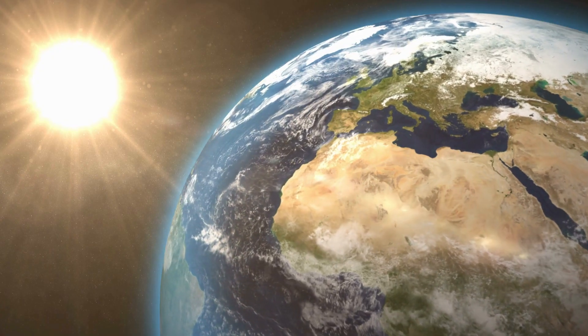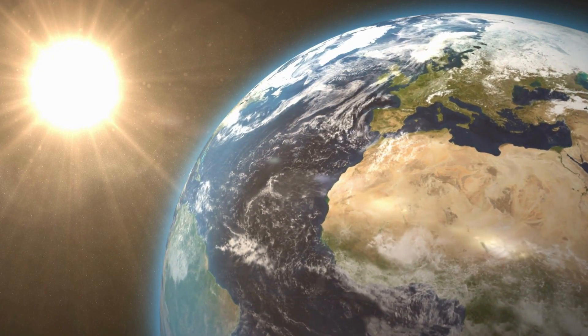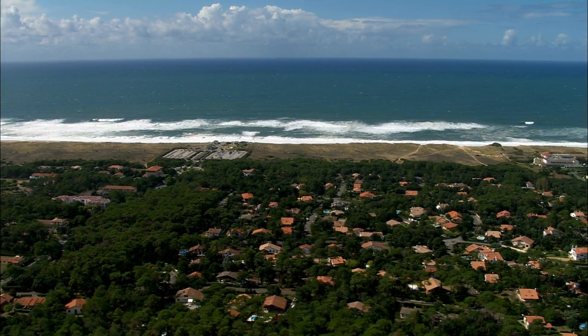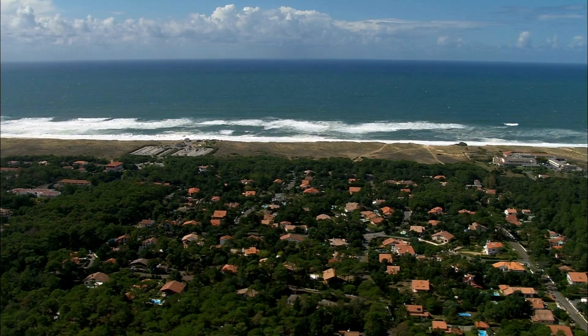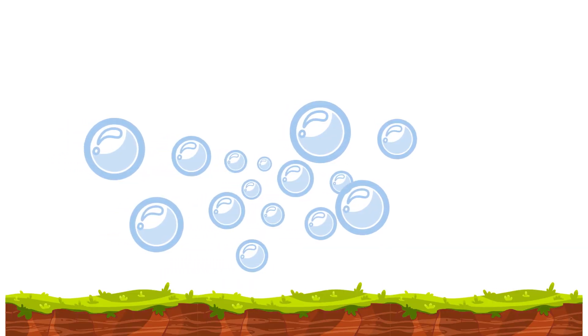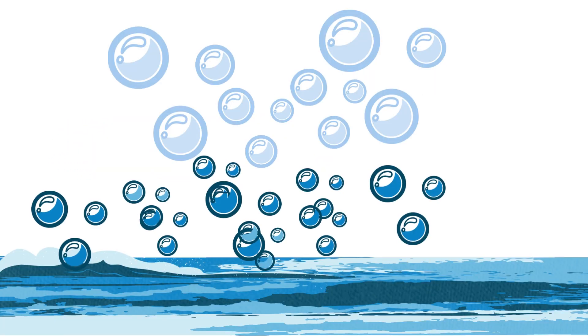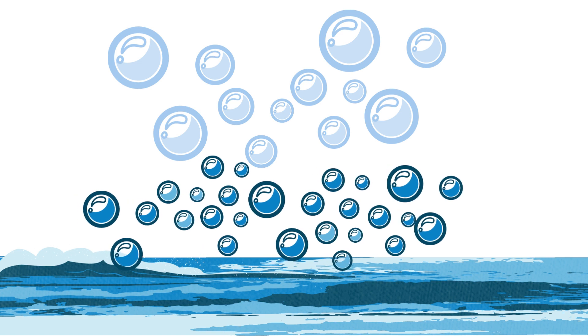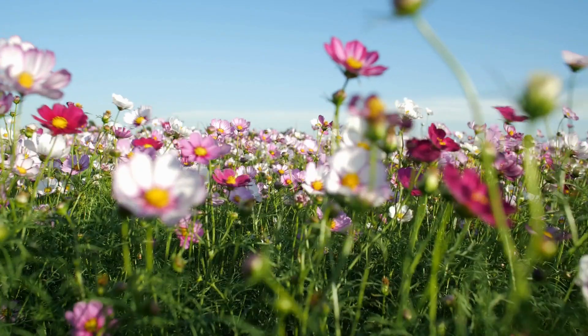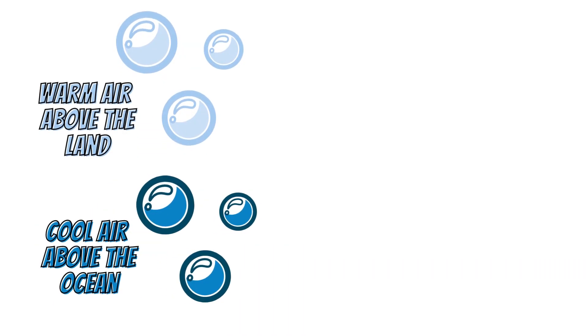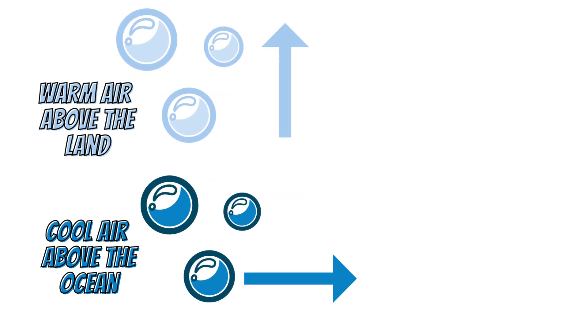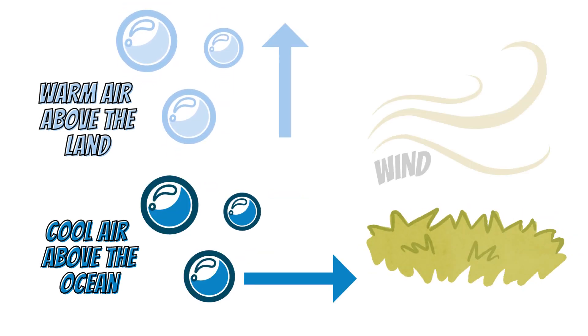The earth absorbs the sun's heat at different rates. This is due to our planet's surface being a mixture of land and water, and because of this uneven heating of the planet, wind is caused. Throughout the day, the air above the land heats up faster than the air above the ocean and sea. This warm air expands and rises, making way for the heavier, cooler ocean air — and this is how wind is formed. The difference in air pressure causes the air to move, and this is how wind is produced.